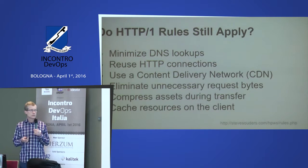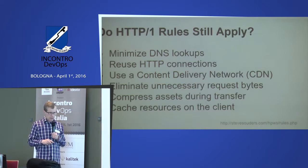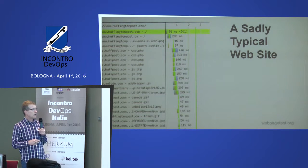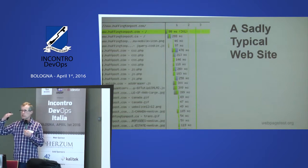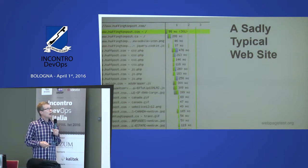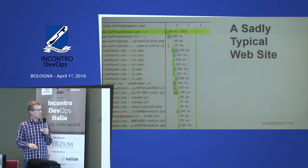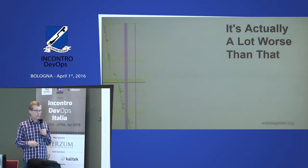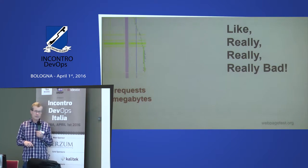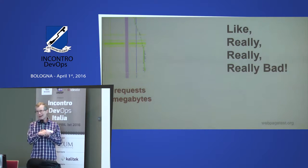Here's a list of best practices that client developers are often told to follow — we're going to revisit these and see whether they still make sense for HTTP/2. Take HuffingtonPost.com as an example, tested with WebPageTest, an excellent tool for seeing what a real-life connection to a website would look like. It simulates a browser and connection speed. HuffingtonPost takes forever — 240 requests, 3.8 megabytes of data to download for that web page. Not great.